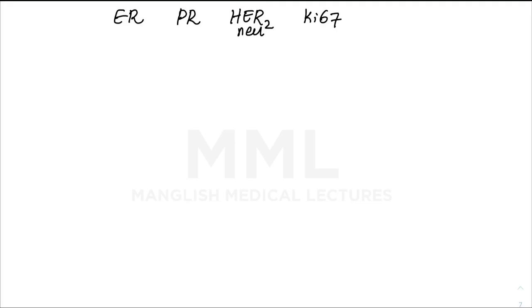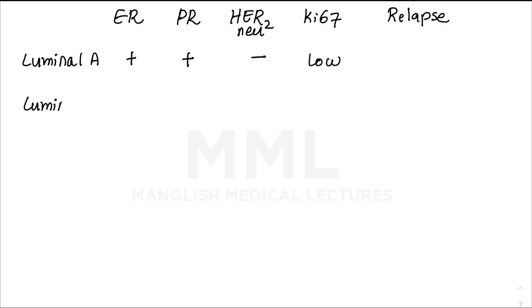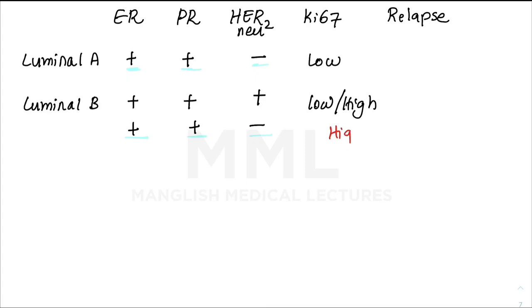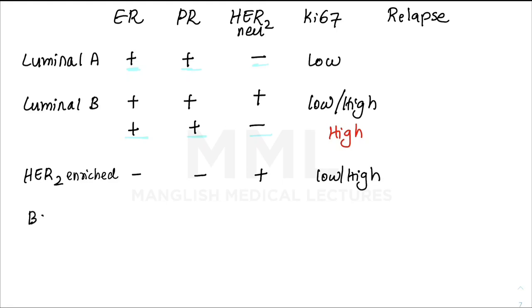The molecular subtypes are as follows. Luminal A: ER positive, PR positive, HER2 negative, low KI67. Luminal B comes in two forms — triple positive (ER+, PR+, HER2+) with high KI67, or similar to Luminal A but with a very high KI67 value. HER2-enriched: everything negative except HER2 positive. Basal-like (triple negative breast cancer, TNBC): negative for ER, PR, and HER2, with a very high rate of proliferation.